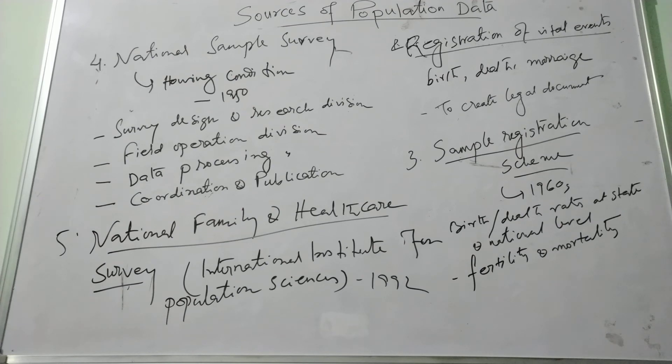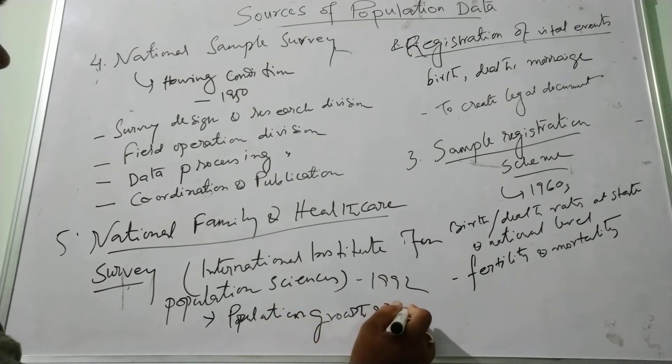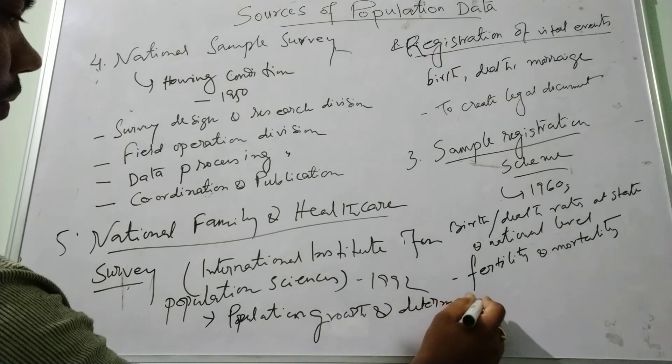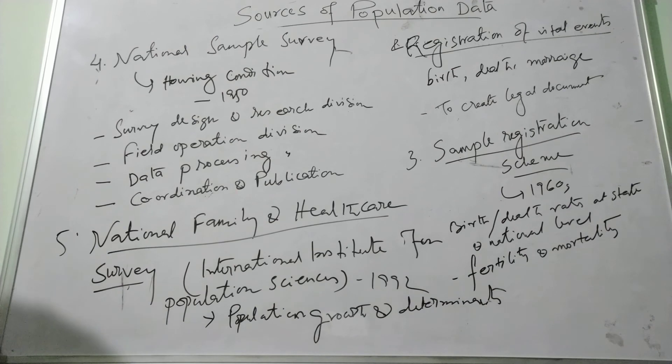The International Institute for Population Sciences was initiated from 1992 to create a database in India to achieve the objectives by providing information on population growth and determinants.